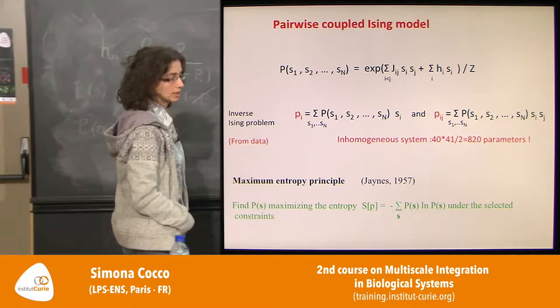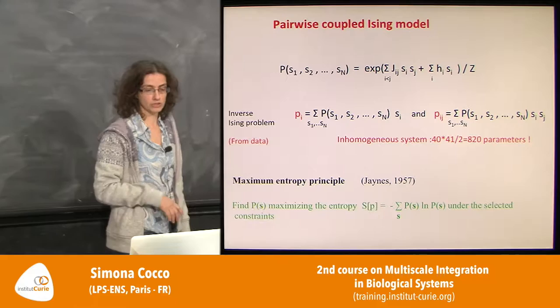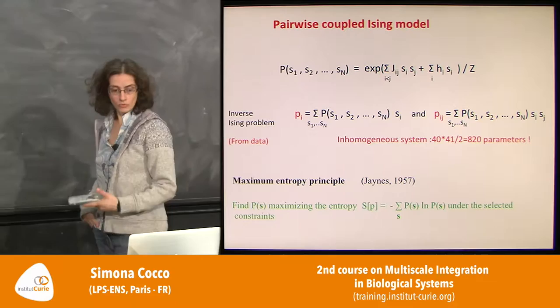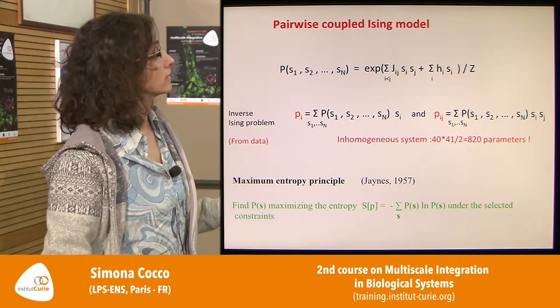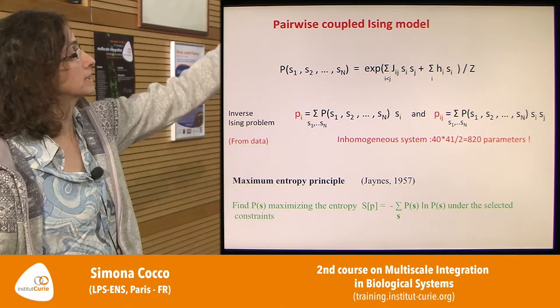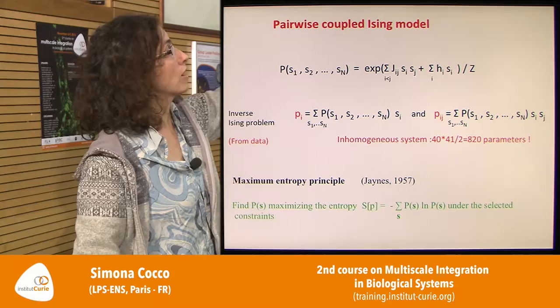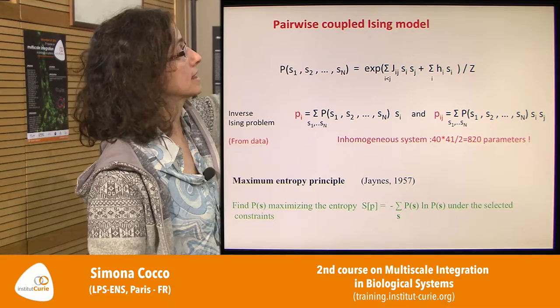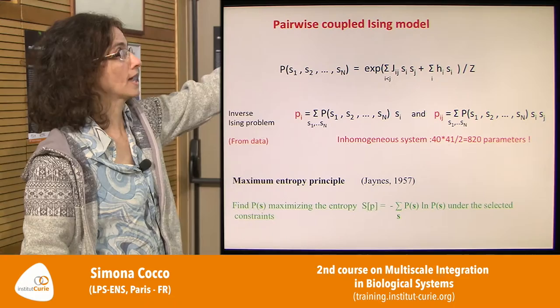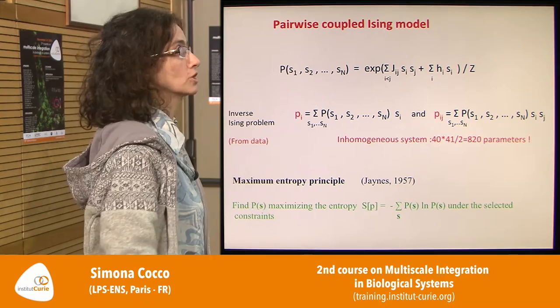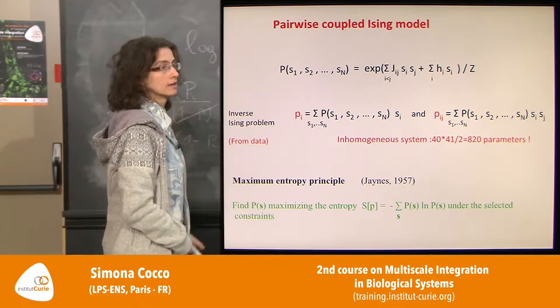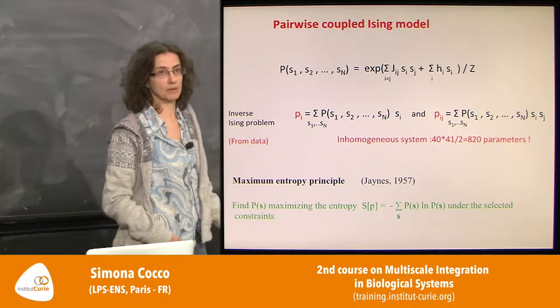There are two practical problems. First, computing the partition function requires summing over 2^N configurations — feasible for 10–12 spins but not more. Second, the solution may not be unique due to undersampling: if p_ij equals zero simply because two cells were never observed spiking together in a finite recording, you get zero modes. This is solved by adding a quadratic regularization term with prefactor gamma, which should go to zero for an infinite number of configurations.